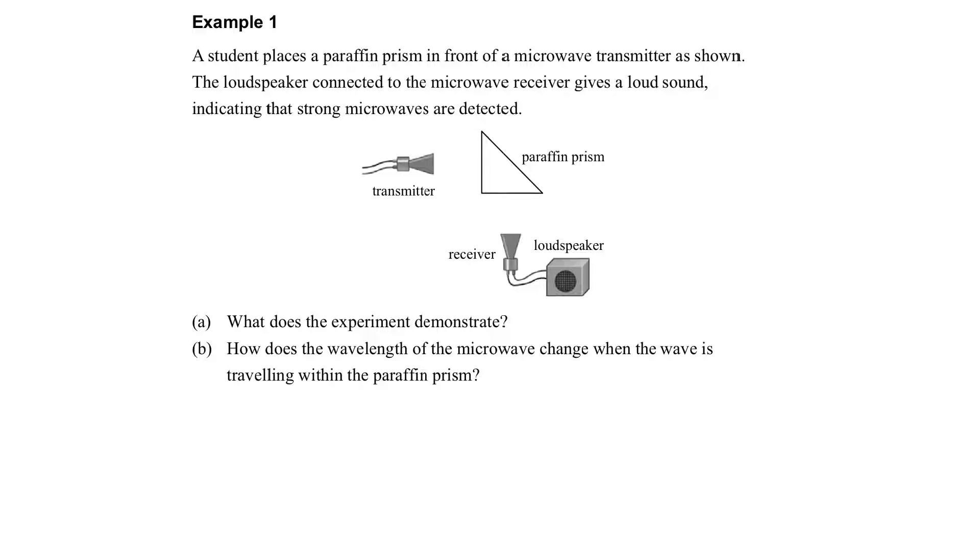Here, when we see something like this, we can just consider it a normal kind of wave. We have a transmitter of the microwave, a paraffin prism, and a receiver.